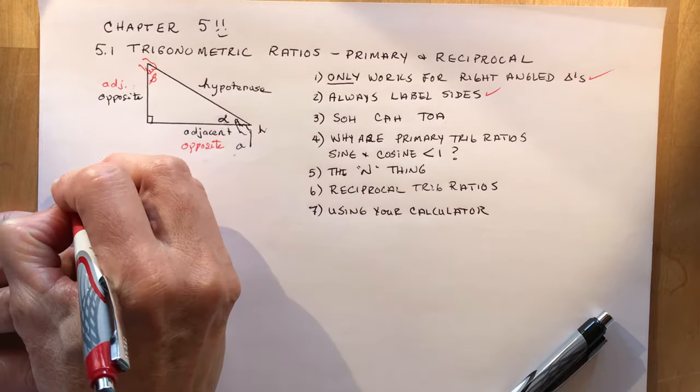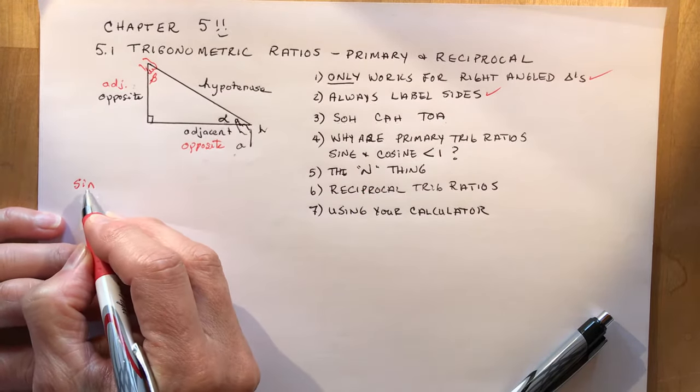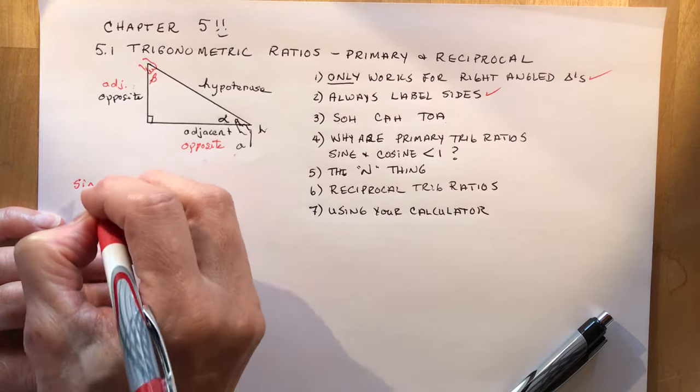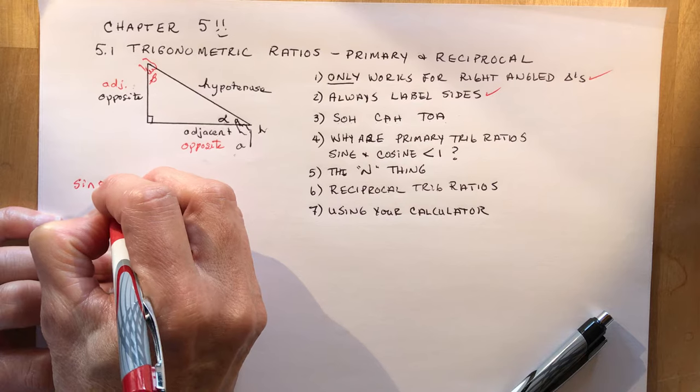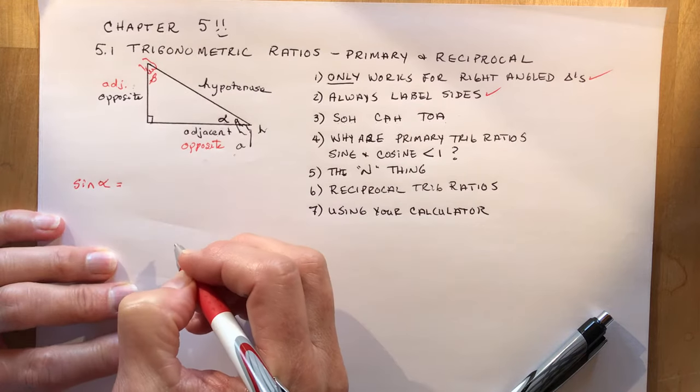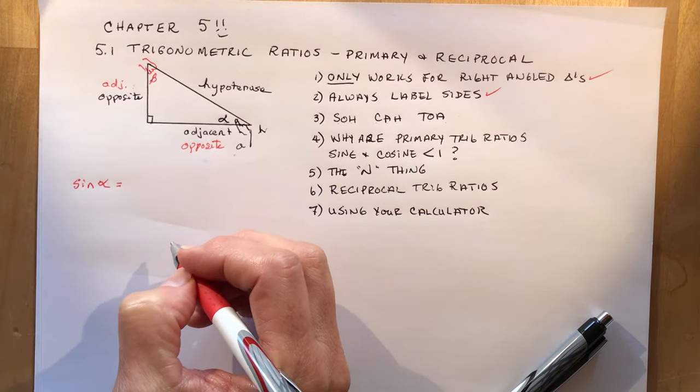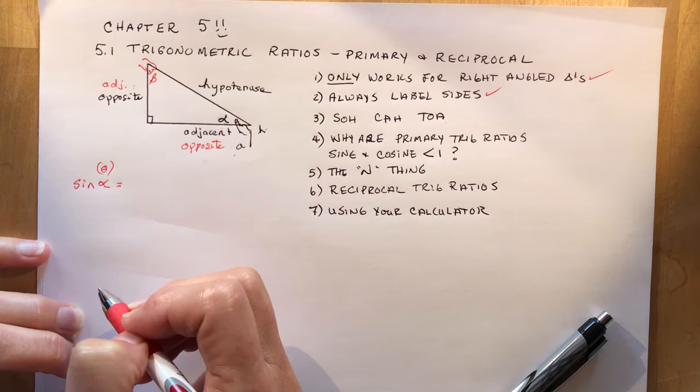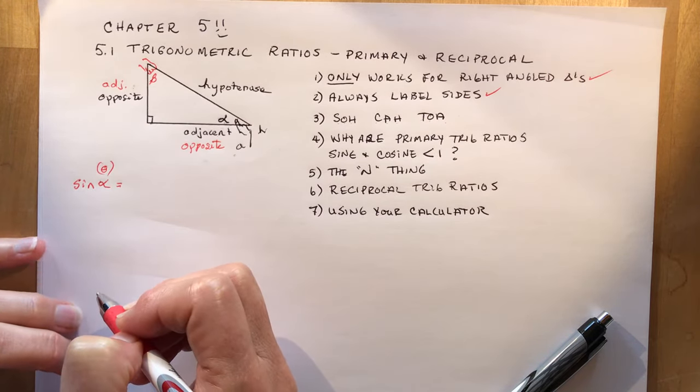Sine, opposite over hypotenuse. Cosine, adjacent over hypotenuse. Tangent, opposite over adjacent. So sine, and you don't just write sine like this, it has to be sine of something. So let's say we're going to talk about the sine of alpha. Or most often in your textbook you'll see theta. I'll write it above here, you could put theta like this, it's a circle with a line through it, another Greek letter.